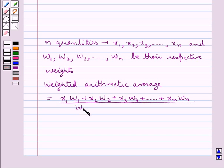w₁ plus w₂ plus w₃ plus and so on up to wₙ. That is, this is equal to summation xw upon summation w. This is the weighted arithmetic average.